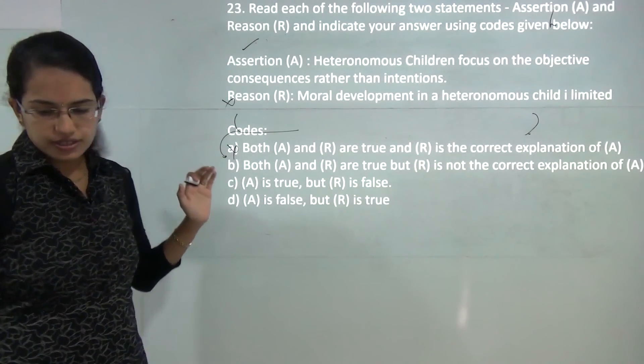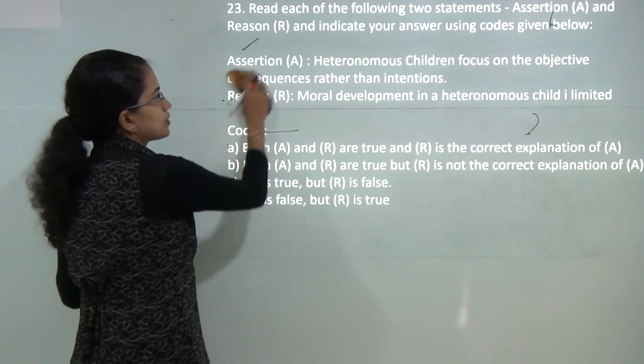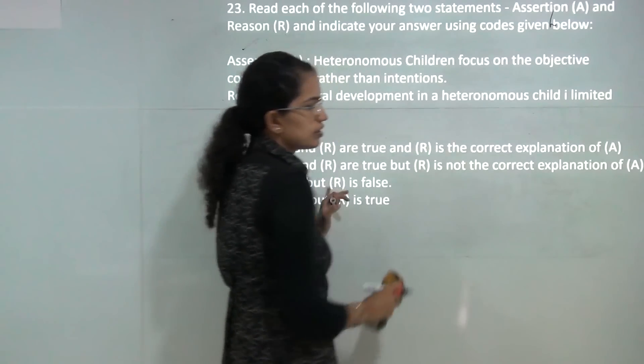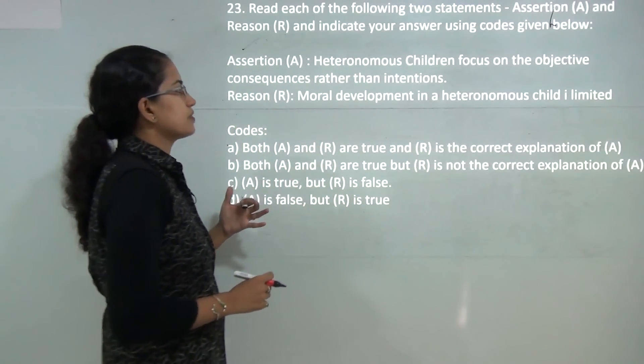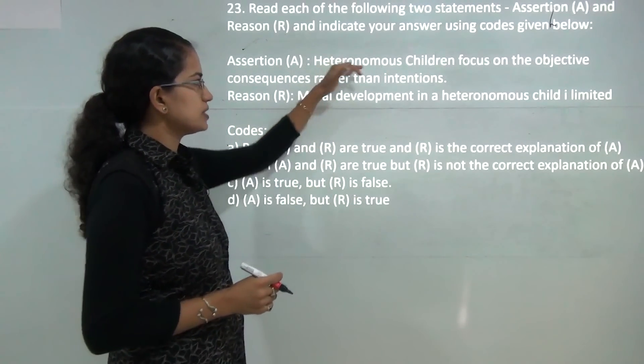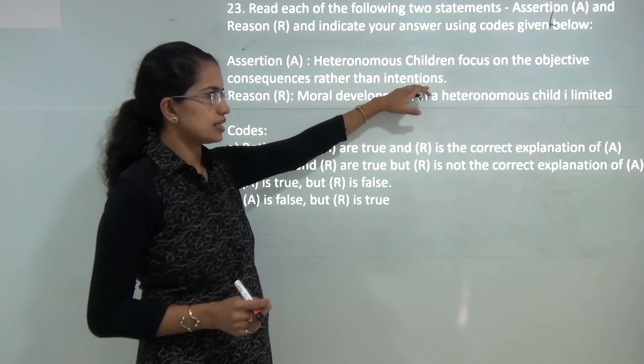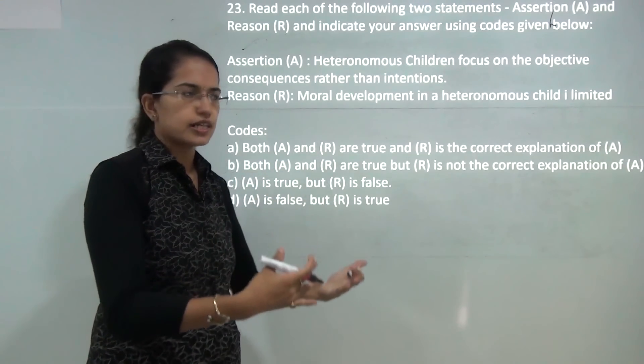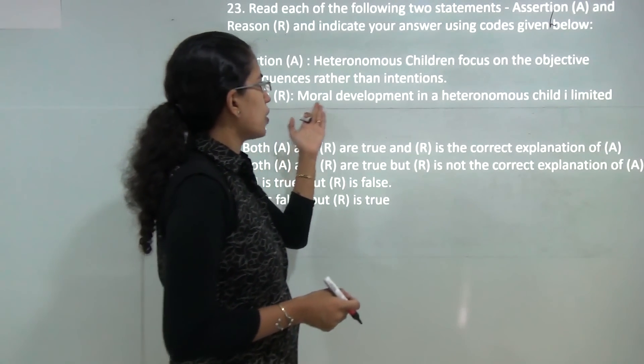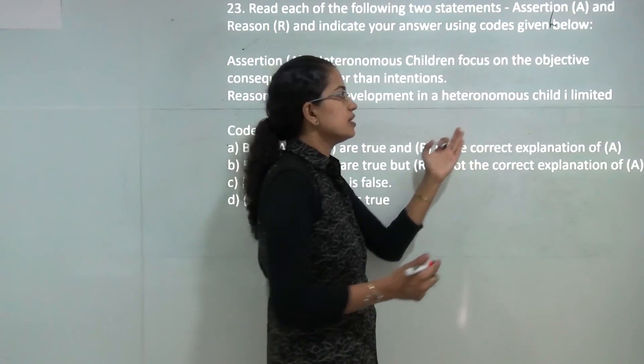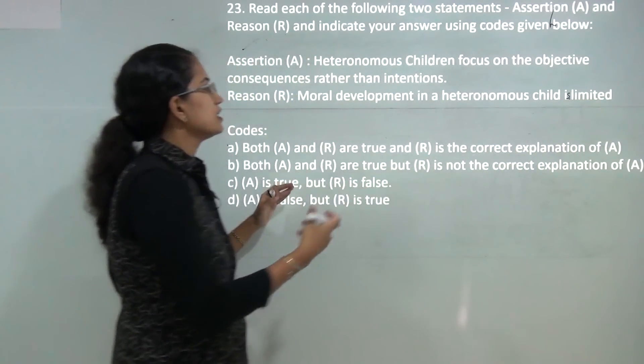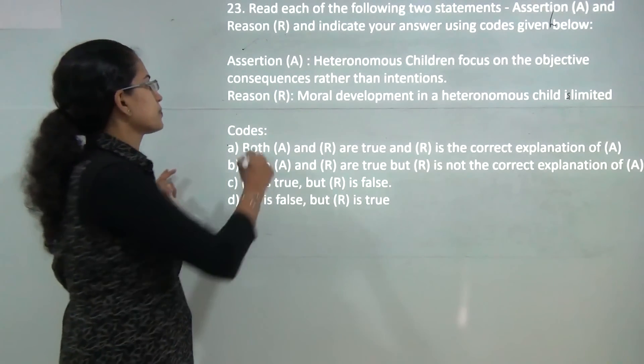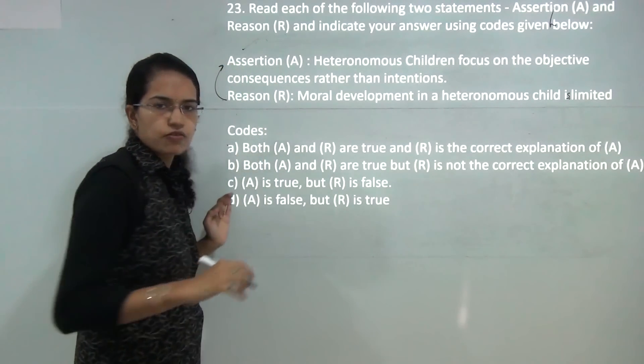Next: you have the assertion-reason question. You have heteronomous children who are able to distinguish between right and wrong, the three stages of moral development given by Piaget. So heteronomous children focus on objective consequences rather than intention. That's correct, because they try to replicate what their parents or their elders are doing, and moral development in heteronomous child is limited. It is just because of this reason that they focus on objective consequences rather than intentions. So reason is the correct explanation for assertion.